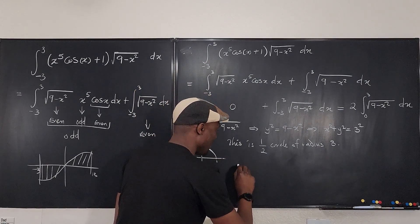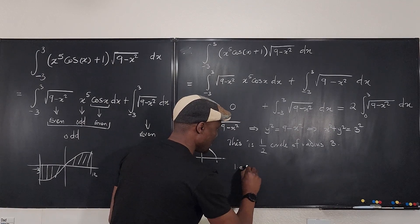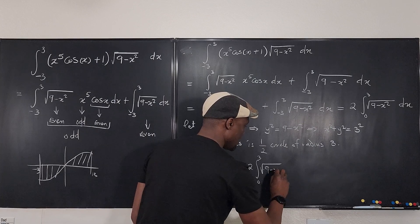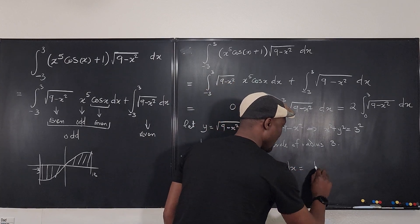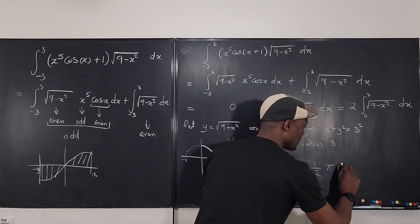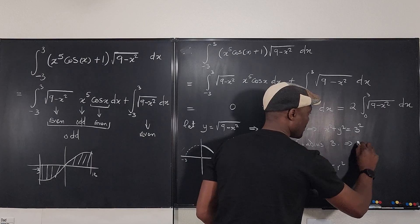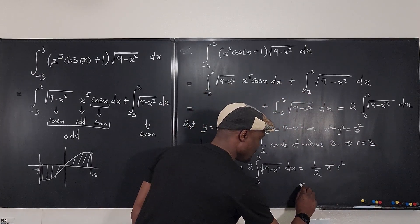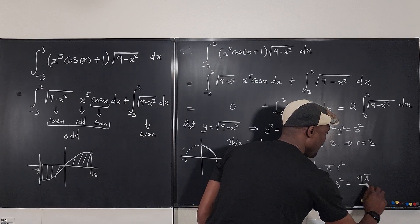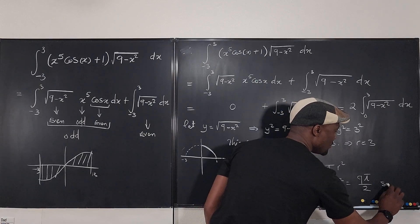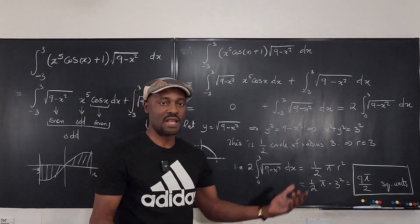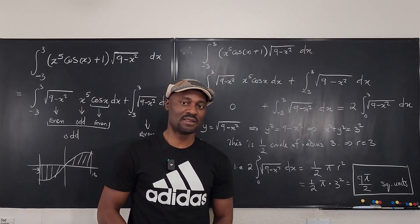So two times the integral from zero to three of √(9 − x²) dx equals one half of the area of a circle, which is one half of π r² where r equals three. That's one half of π times three squared, which equals nine π over two square units. And this is the answer. Never stop learning — those who stopped learning have stopped living. Bye-bye!